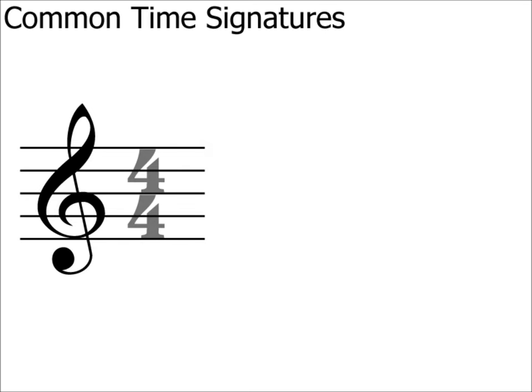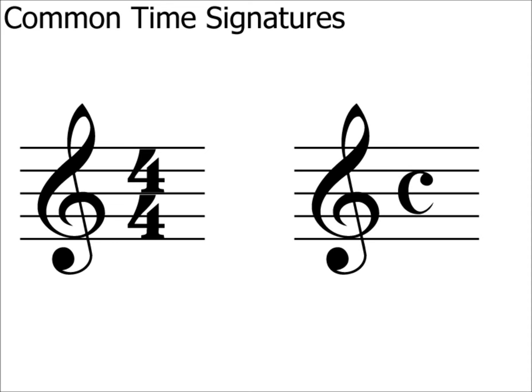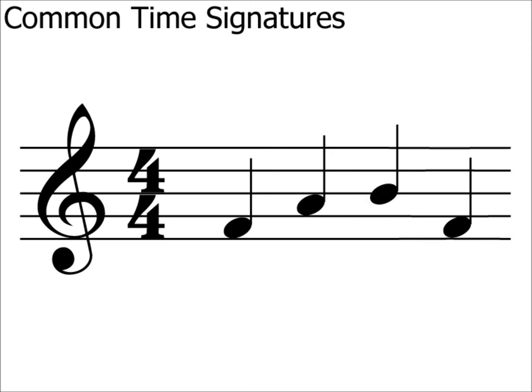Hopefully by now you're getting the hang of what time signatures represent, so let's look at some fairly common time signatures. 4/4 is a very common time signature, so much so it is often abbreviated to the C symbol, which is short for common time. Now, this time signature means that there are four crotchet beats in a bar. But it clearly doesn't mean that we can only write four crotchets in each bar. We can write anything we wish in the bar as long as the total value of the beats is exactly four — no more and no less.